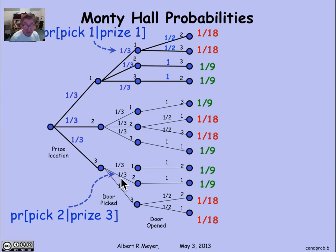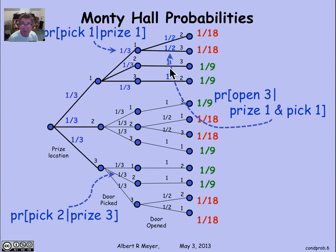Here's another third. This is similarly the probability that the contestant will pick door 2 given that the prize is at door 3. That's symmetric to this one. But here's something a little bit different. Here's a half. This is the probability that door 3 will be opened by Carol given that the prize is at 1, that's that branch, and the contestant picked 1.